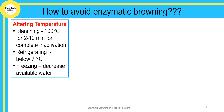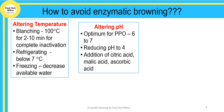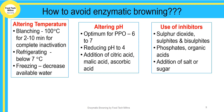Another method is by altering the pH. The optimum pH for polyphenol oxidase is 6 to 7, so reducing the pH to 4 by the addition of acids like citric acid, malic acid, or ascorbic acid can reduce enzymatic browning. Another method is the use of inhibitor substances like sulfur dioxide, sulfates, bisulfate, phosphate, and organic acids.